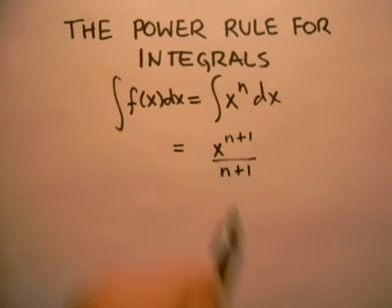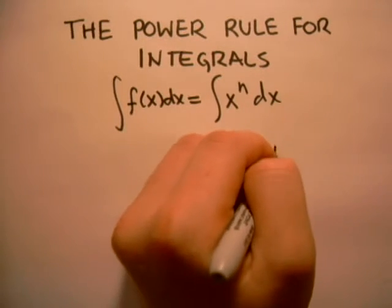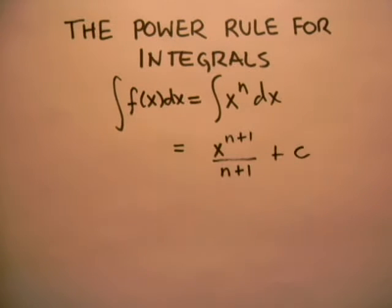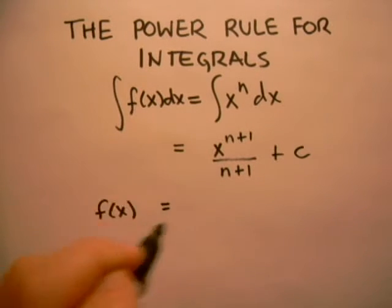And then, as with all indefinite integrals, we add a constant. For example, if we had f of x equals four x squared minus six x to the fourth.